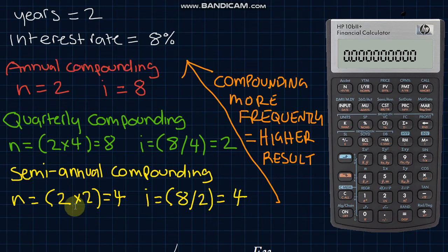For semi-annual compounding, multiply the number of periods by 2 and divide the interest rate by 2 and use these figures in your calculation. And just remember that compounding more frequently will always give you a higher result because you're earning compound interest on compound interest within the period.